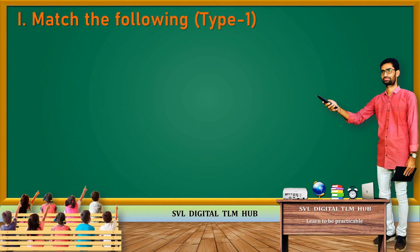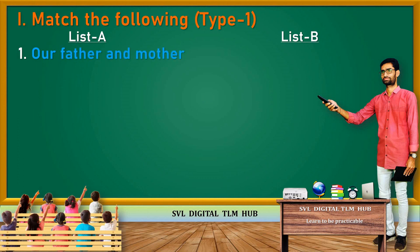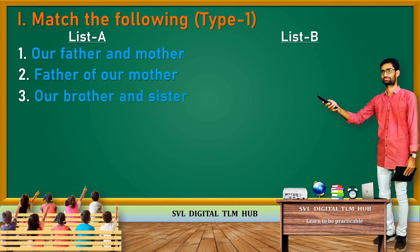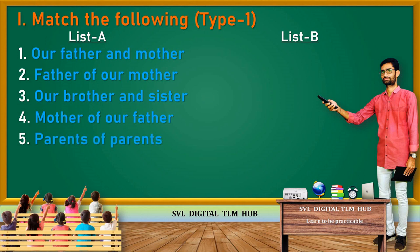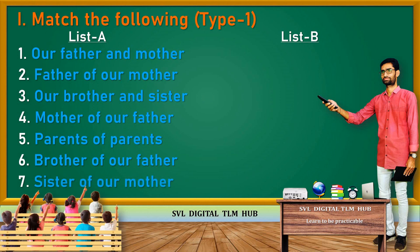Match the following, Type 1. List A, List B. Children, are you ready to do the worksheet? Now observe the given words under List A. 1. Our Father and Mother. 2. Father of Our Mother. 3. Our Brother and Sister. 4. Mother of Our Father. 5. Parents of Parents. 6. Brother of Our Father. 7. Sister of Our Mother. These are the given items under List A.